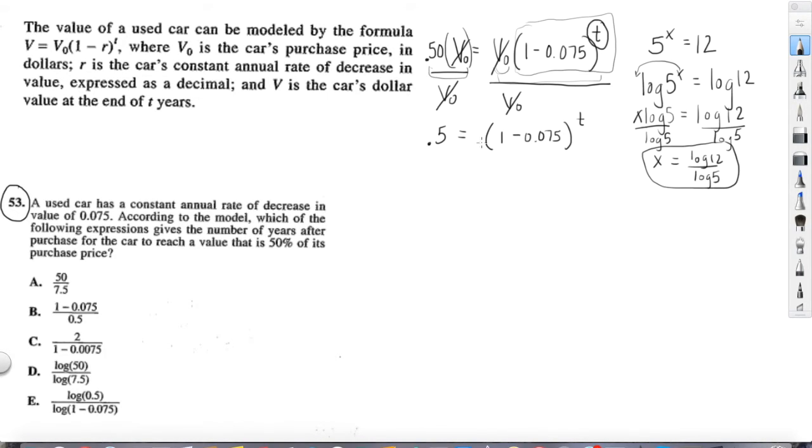Now, we can perform our rule. Log of 0.5 equals log of 1 minus 0.075. And this is raised to the T, but we said we can bring that T down. So let's just do that and put the T over here. T times that.